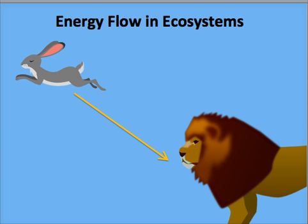A second type of consumer is the carnivore. Carnivores obtain their energy by eating meat. Some carnivores, such as humans, also eat plant matter. They are considered omnivores.